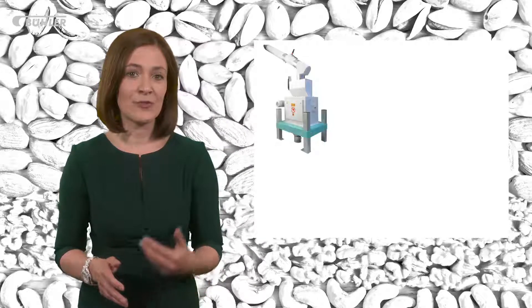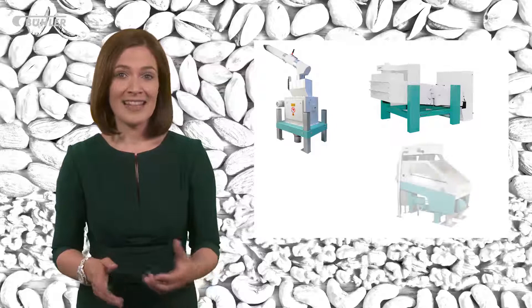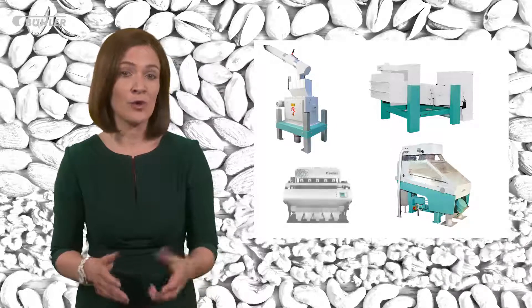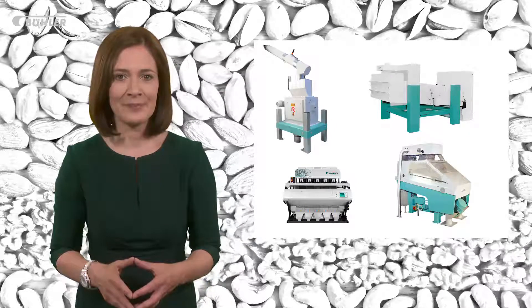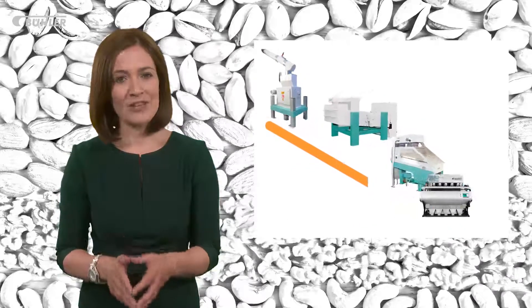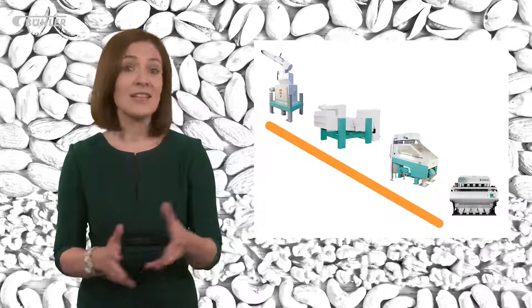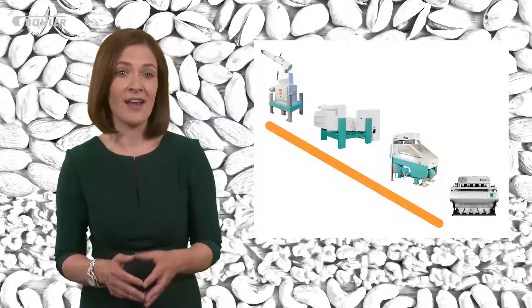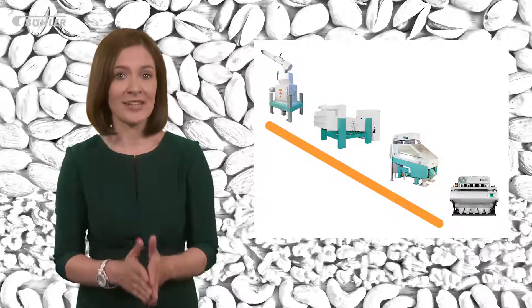Different removal and separation machines look at different properties in order to remove foreign bodies, and there is no single machine which will remove all types or eliminate them completely. That's why it's important to have a solid line of defence — a sequence of machines throughout the entire nut processing line to minimise the risk of foreign bodies being present.